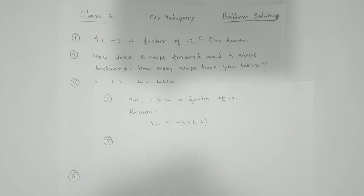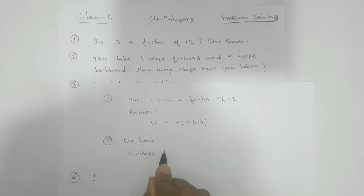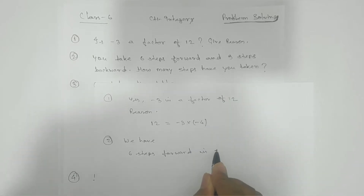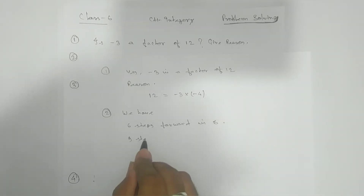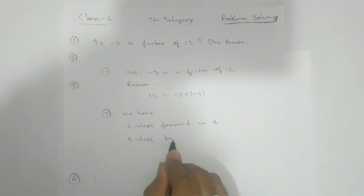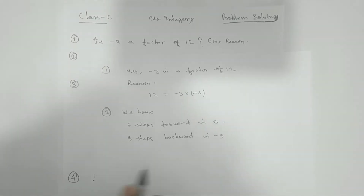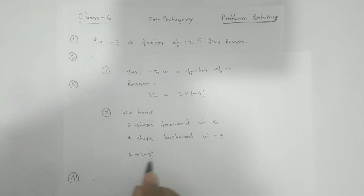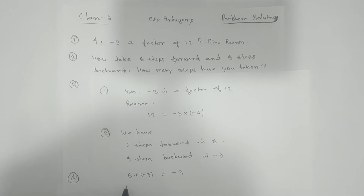Next problem: you take six steps forward and nine steps backward, how many steps have you taken? Six steps forward is plus 6, and nine steps backward means minus 9. So we solve: 6 plus minus 9, which gives us minus 3.